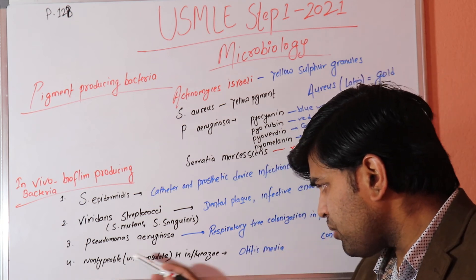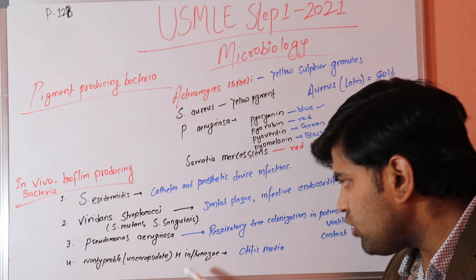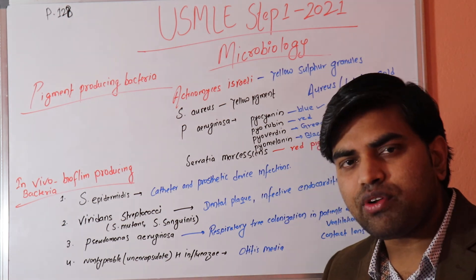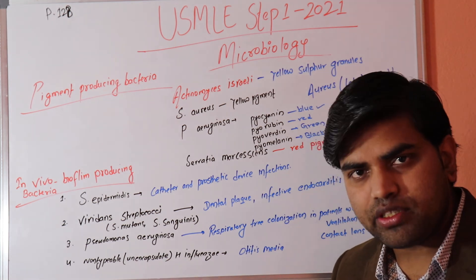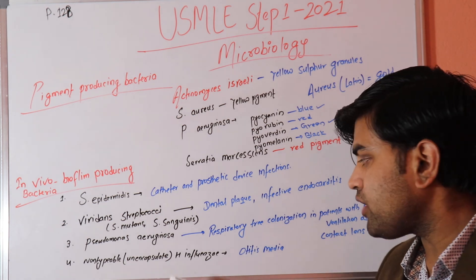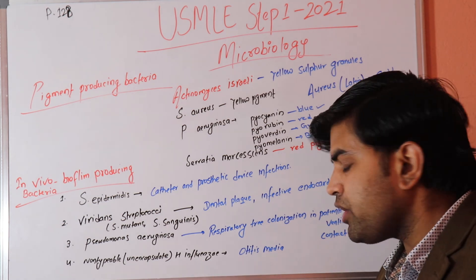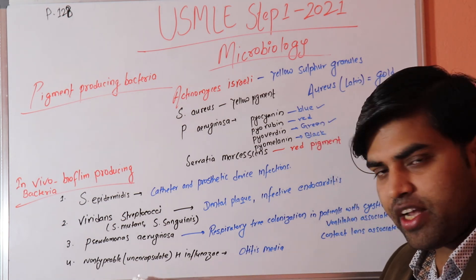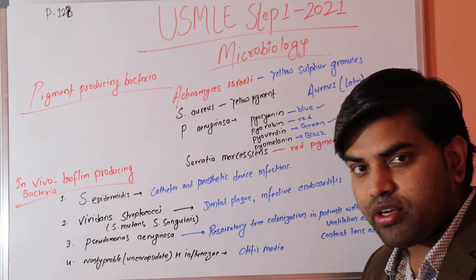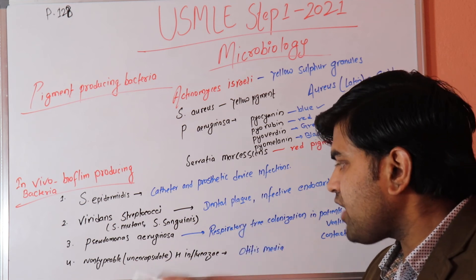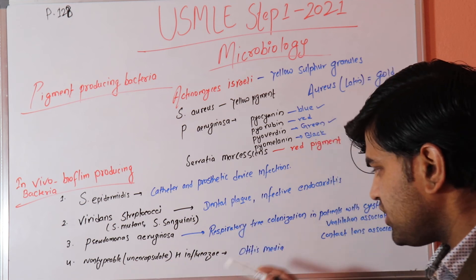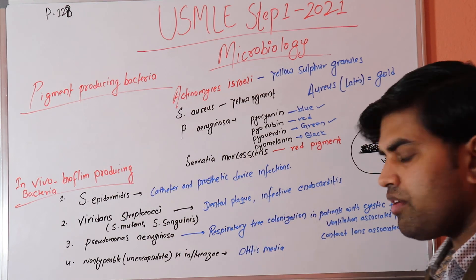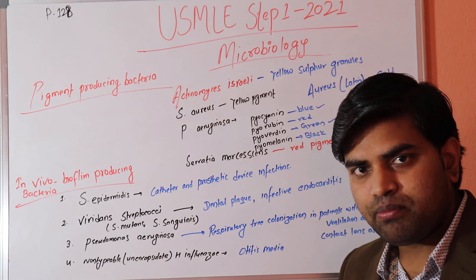Non-typeable Haemophilus influenzae — the unencapsulated form — is not responsible for major invasive diseases like the encapsulated type B strain. However, non-typeable H. influenzae can cause disease through biofilm formation, primarily causing otitis media (ear infection).